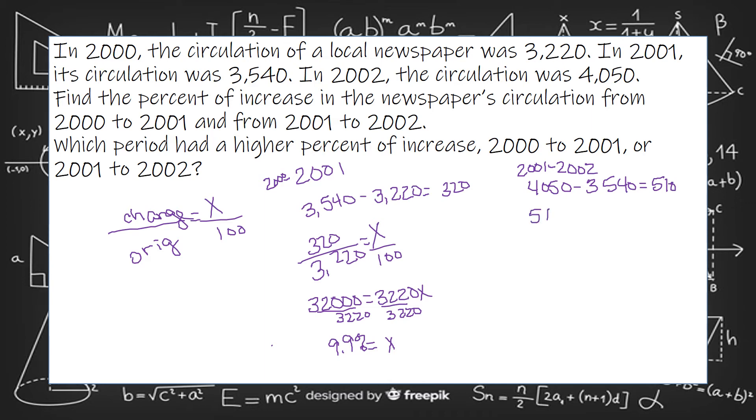So 4,050 minus 3,540. So the amount of change here was 510. Now the original in this one is different because we started in 2001. The amount in 2001 was 3,540.